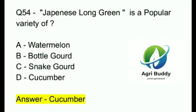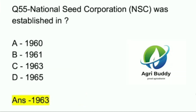Question 54. Japanese long green is a popular variety of? A. Watermelon. B. Bottle gourd. C. Snake gourd. D. Cucumber. And the answer is Cucumber.